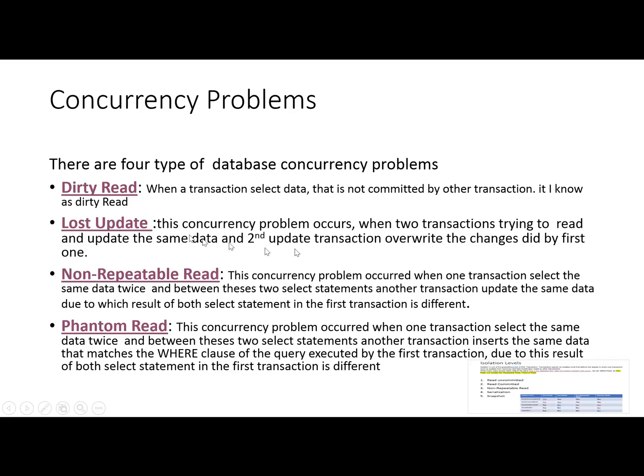The lost update concurrency problem occurs when two transactions try to read and update the same data. Both transactions read the same data, then both attempt to update it. The first transaction updates it, but when the second transaction also updates, it overrides the modifications made by the first.